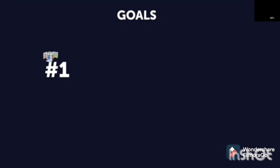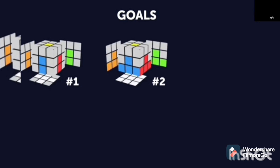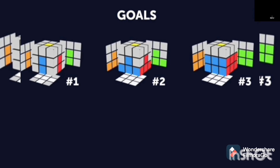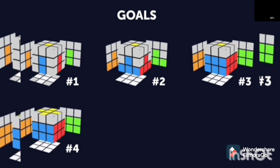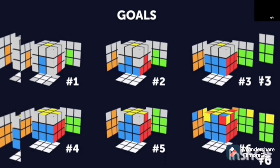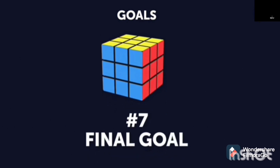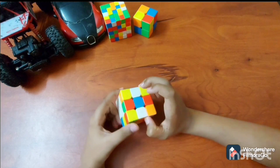Now you have to listen to the goals. First goal: solve the white cross. Second goal: solve the corners. Third goal: solve the middle layer. Fourth goal: solve the top yellow cross. Fifth goal: solve the top edge. Sixth goal: arrange the corners. Seventh goal: the final goal is to solve the Rubik's Cube.